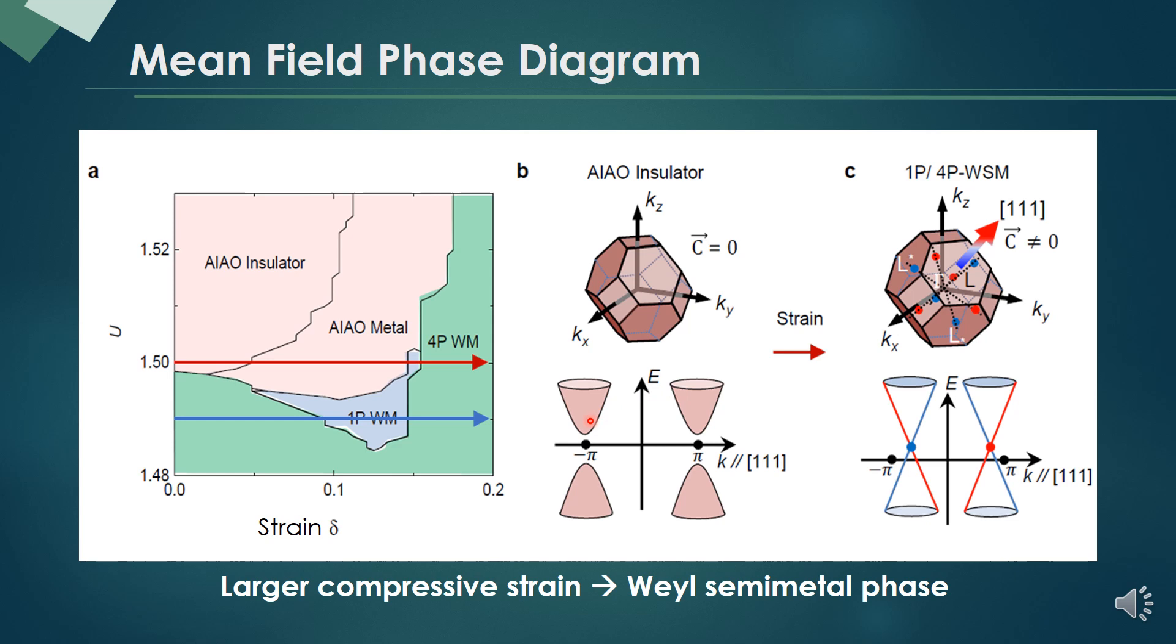So, we can expect that when we apply more strain to the film, we can find the Weyl semimetal.